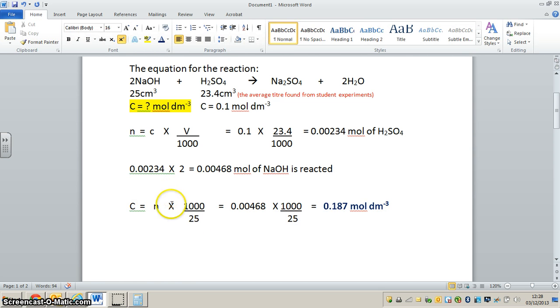Here we have this equation rearranged to make concentration the subject. Concentration equals the number of moles times 1000 divided by 25. We know what the number of moles is, there they are, times 1000 divided by 25.